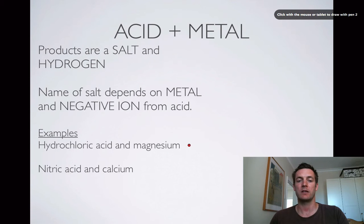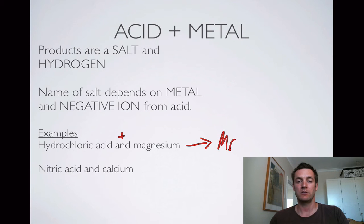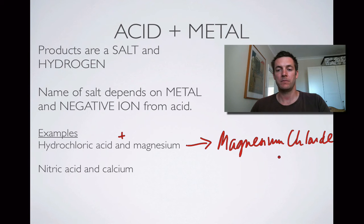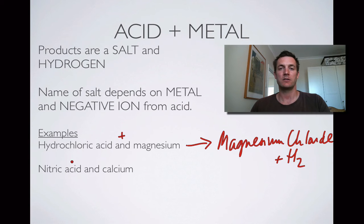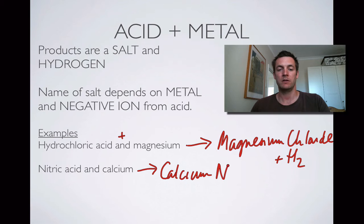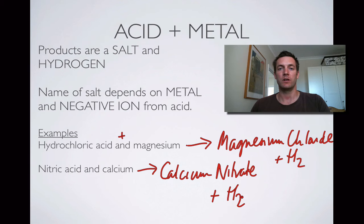For example, if we use hydrochloric acid and magnesium, we're going to end up with magnesium chloride — because we've got the negative ion from hydrochloric acid — and hydrogen, H₂. Remember that hydrogen is a diatomic molecule. Here's nitric acid, which has a nitrate ion, so when reacted with calcium you're going to make calcium nitrate and hydrogen. If you're writing a word equation you ought to write hydrogen out as a word.